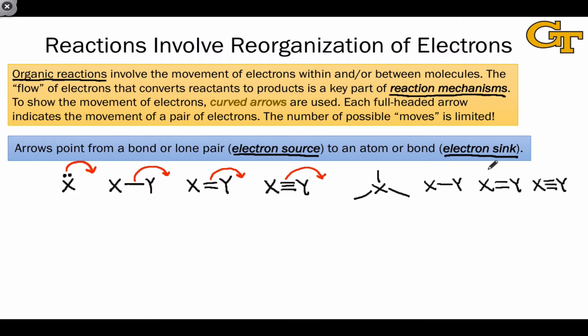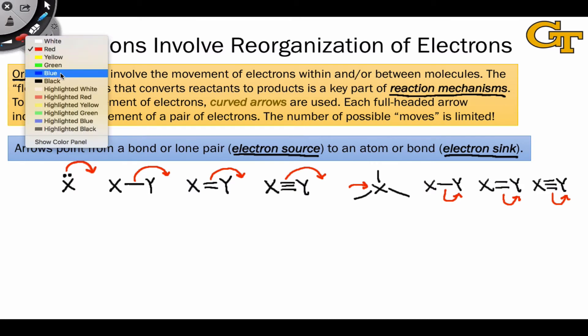Now, this may seem natural and obvious, but it does limit our options. When it comes to electron sinks, the only places we can land electrons are on an atom, like so, or in some cases, on a bond. If we use a pair of electrons to show, for example, the formation of a bond.